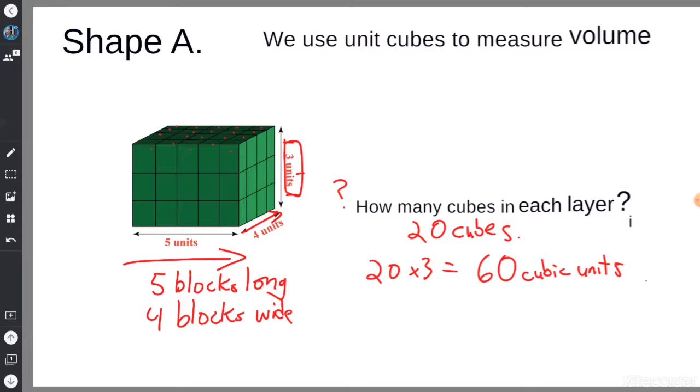Another way to figure out how many are on each layer is to do 5 times 4, and that would give you a total of 20. Let's go on to Shape B now.